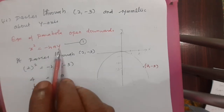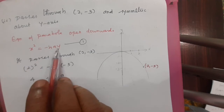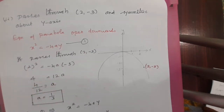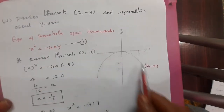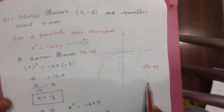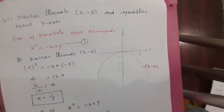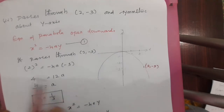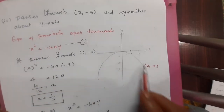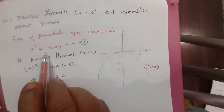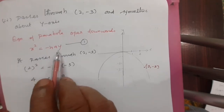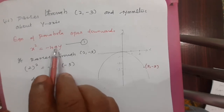The four types of parabola equations are: open downward — x squared equals minus 4ay; open upward — x squared equals plus 4ay; open rightward — y squared equals 4ax; open leftward — y squared equals minus 4ax. Since the curve is symmetric about the y-axis and opens downward, we use x squared equals minus 4ay. We are going to find the value of a by substituting the given point.